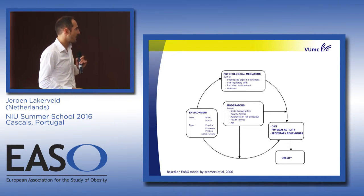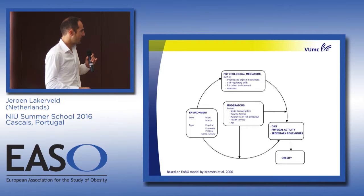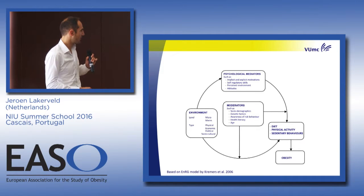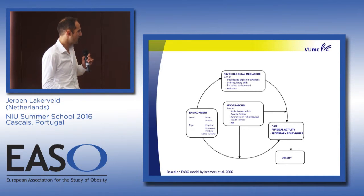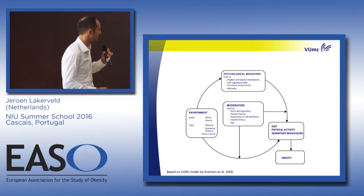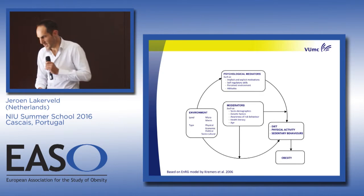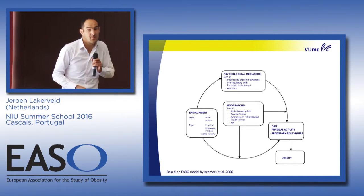This is a model based on Stef Kremers' energy balance model, where obesity is influenced by diet, physical activity, and sedentary behavior, which are in turn influenced by different types of environment — micro and macro, physical, economic, political, and socio-ecological — and moderated by sociodemographics, genetic factors, awareness of risk, health literacy, and age, and mediated by attitudes and motivation. It's quite a useful model, but again it is a simplification.